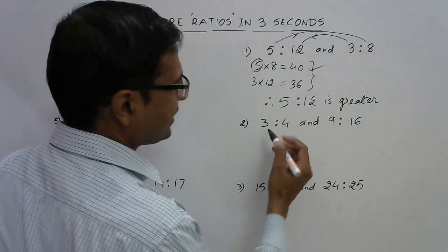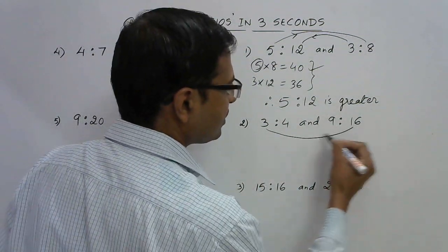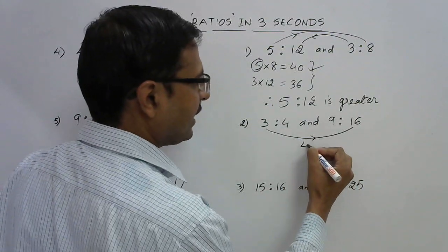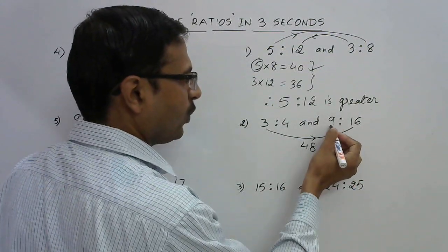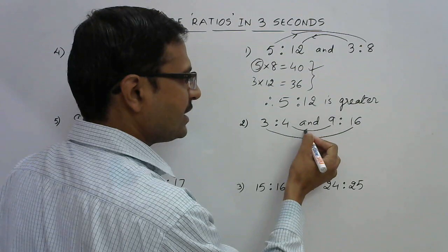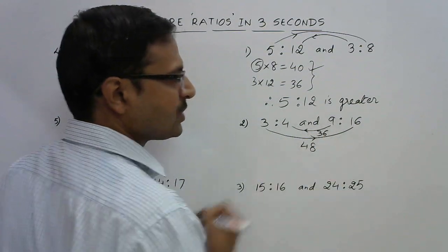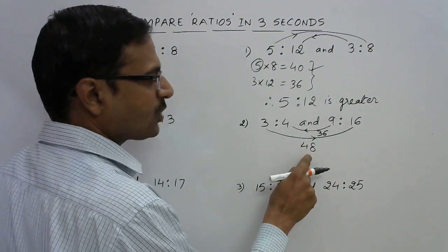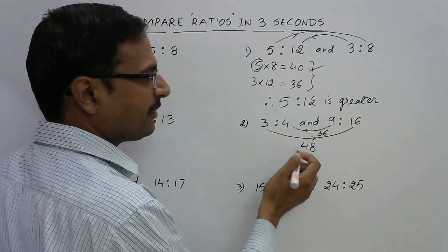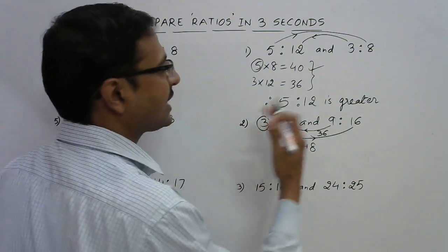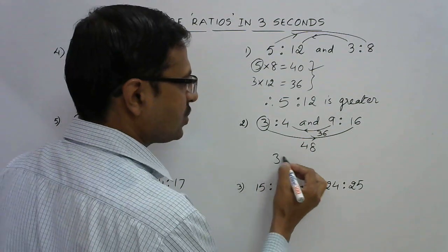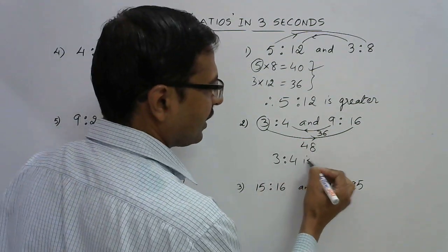Now let's apply it here. You can see very easily that 3 into 16 is 48 and 4 into 9 is 36. So 48 is greater, and 48 is obtained by multiplying the first term of the first ratio with the second term of the second, so 3 ratio 4 is greater.